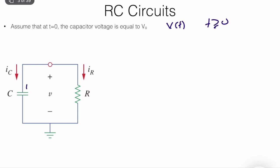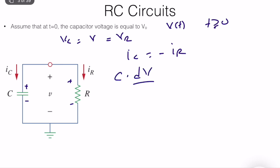This is the capacitor current labeled in the circuit. We also use passive sign convention for the energy storage element. This is plus-minus, this is VR. We know that VC equals V, which equals VR. And we know that IC equals minus IR. So what is IC? The capacitor current is equal to C times dV/dt — it's dVC, but we can just write dV because of the circuit framework.